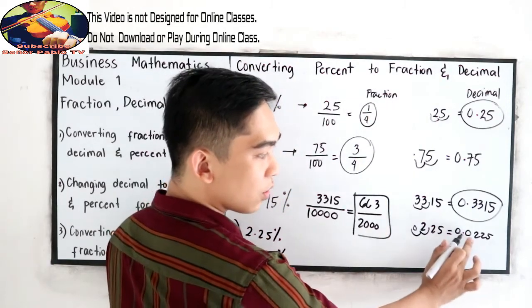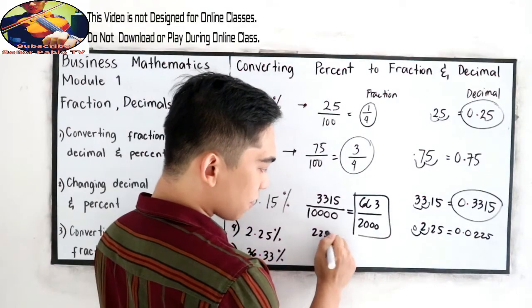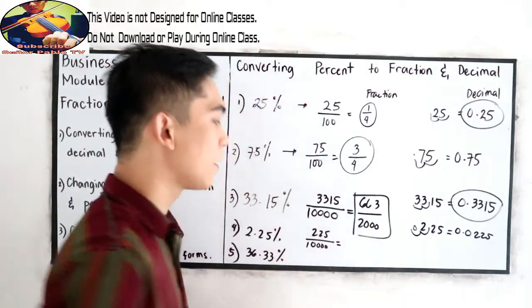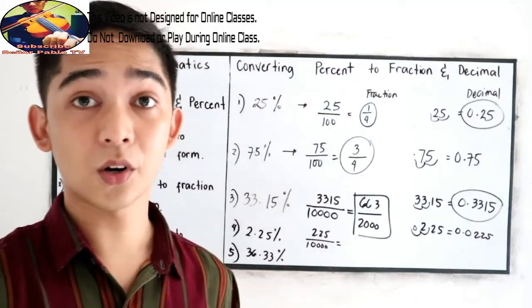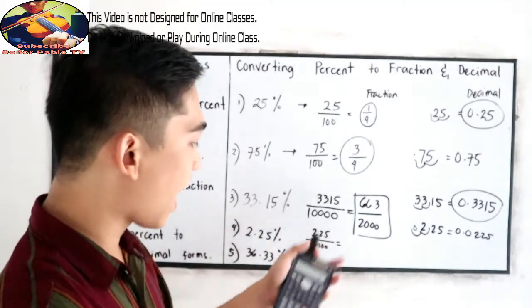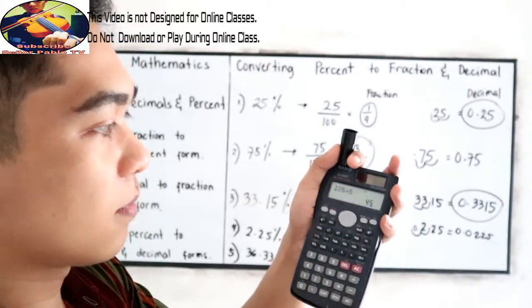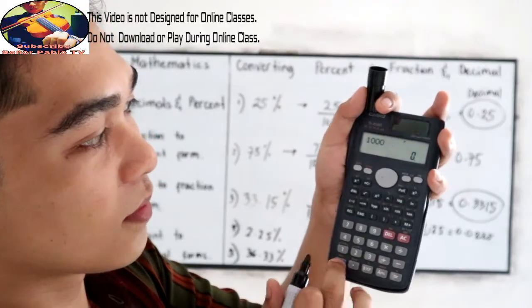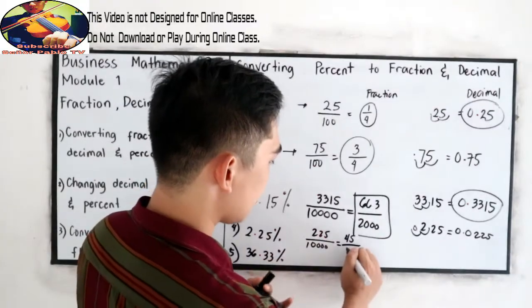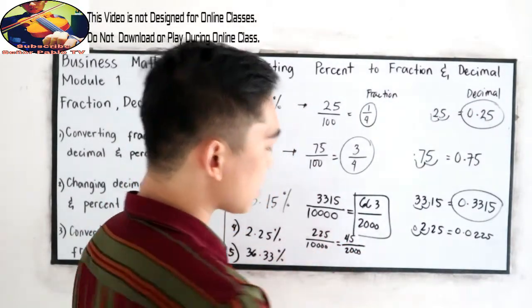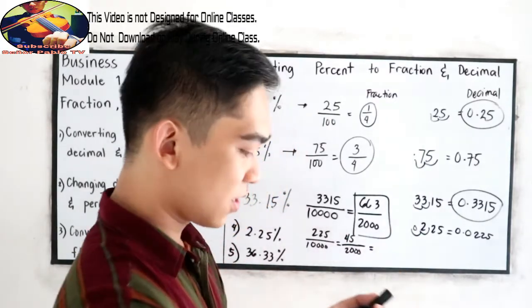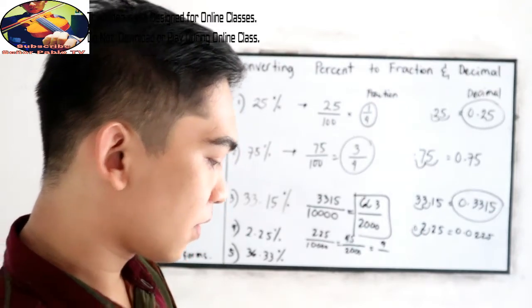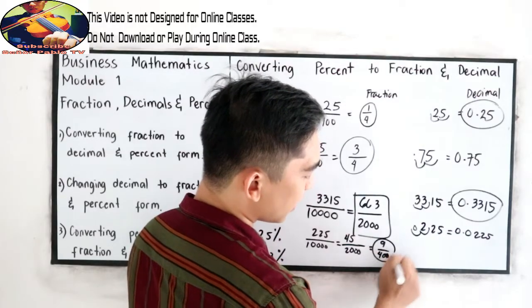Then go into fraction. We have 225 — do not include the leading zero. Over how many decimal places? 1, 2, 3, 4 — so we have 4 zeros in our denominator, giving us 225 over 10,000. Reduce to lowest terms: divisible by 5, so 225 divided by 5 is 45, and 10,000 divided by 5 is 2,000 — that's 45 over 2,000. Still divisible by 5: 45 divided by 5 is 9, and 2,000 divided by 5 is 400. So 9 over 400 is the fraction form.